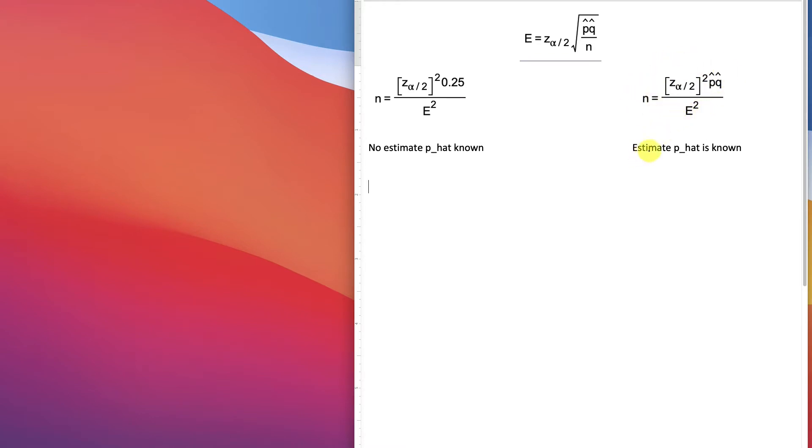Now this is an equation when p-hat is known. So an estimate for p-hat is known, and p-hat is the sample proportion. Over here, no estimate for p-hat is known, and this is more likely the case.